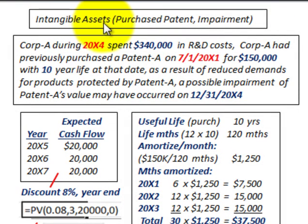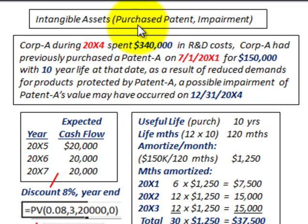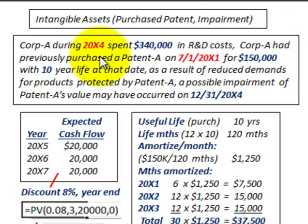We're going to be looking at intangible assets, specifically a purchased patent and impairment on this patent. We'll be calculating the impairment and looking at how we'd record it. Corporation A during 20X4 spent $340,000 on research and development costs. Corporation A had previously purchased Patent A on 7/1/20X1 for $150,000, buying it from an outside party for their own use.